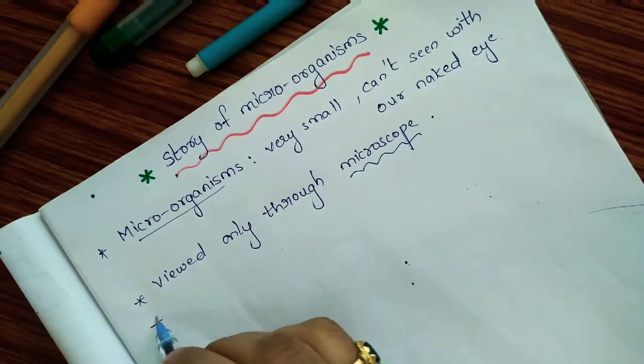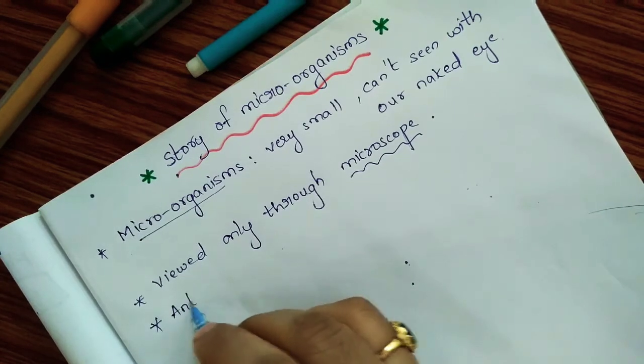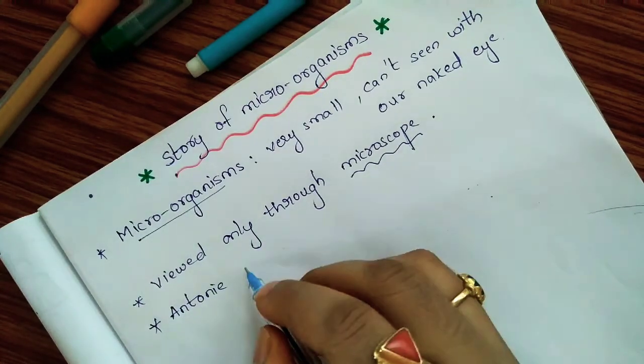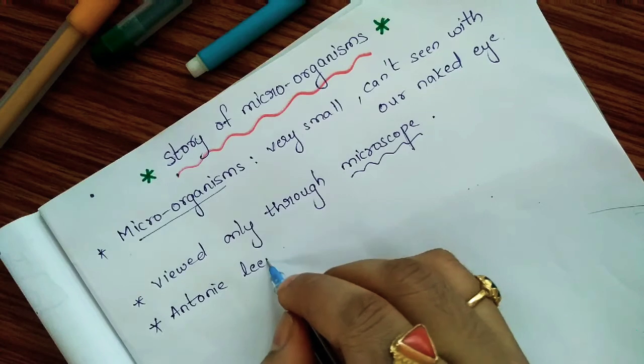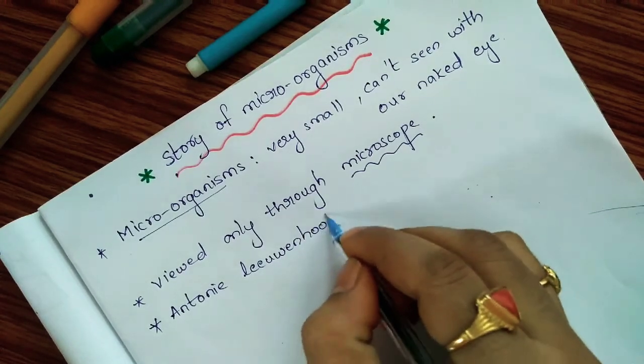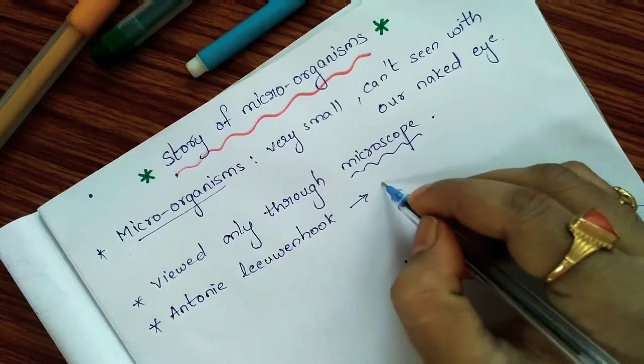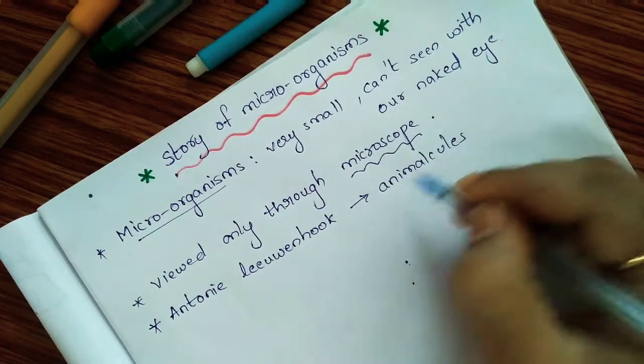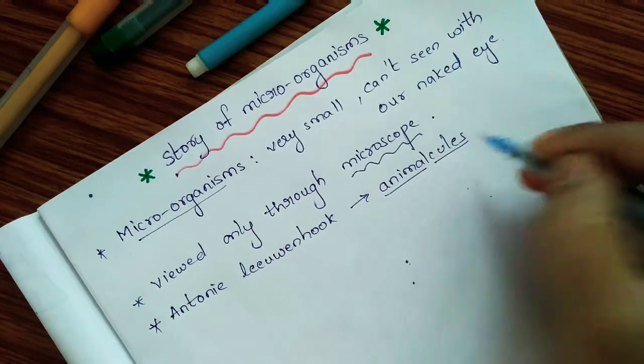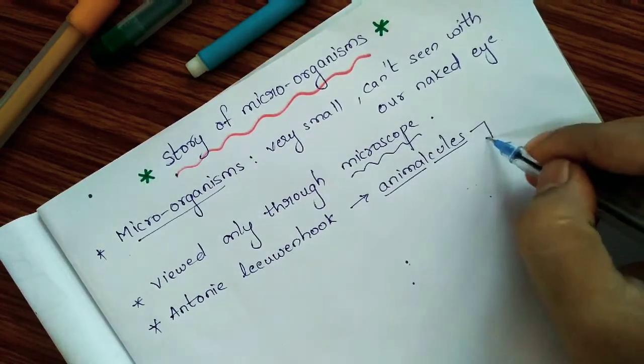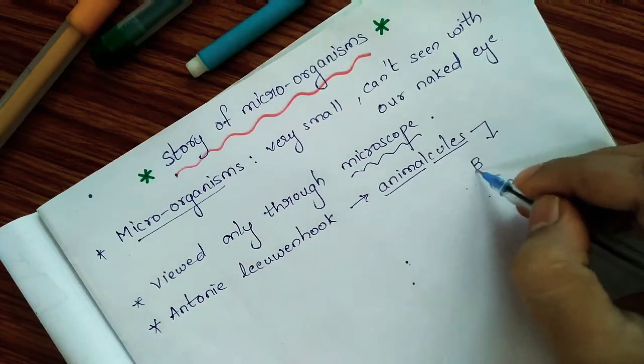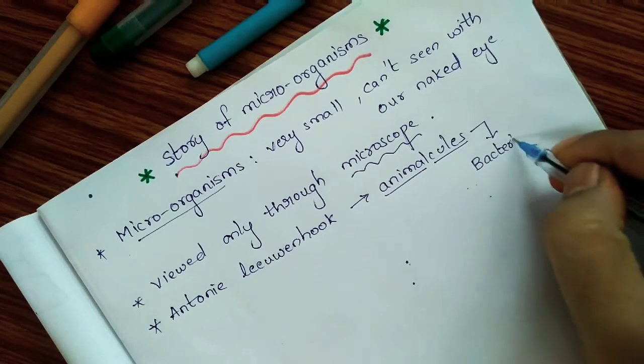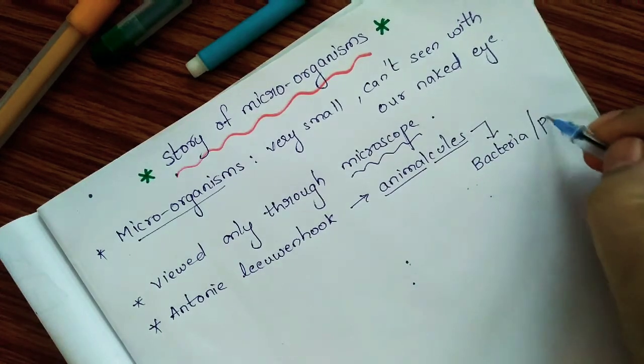We learned that Antony van Leeuwenhoek discovered microorganisms. When he discovered them, he called them animalcules. He called small living creatures which he observed under the microscope as animalcules. Later, these animalcules were named as bacteria. Some of them were named as protozoa.